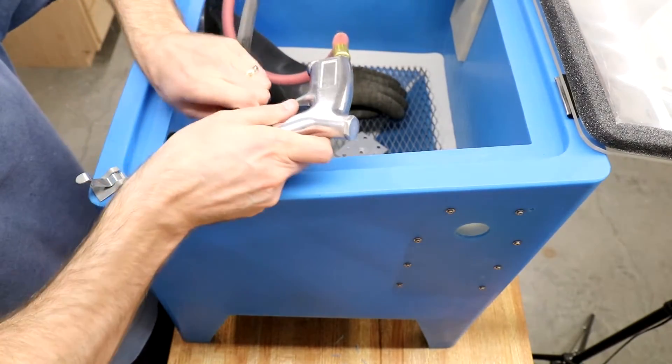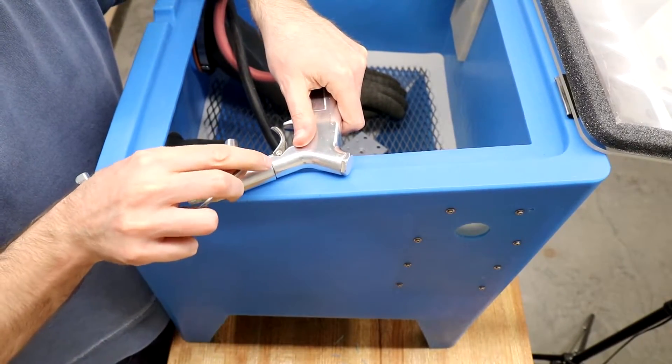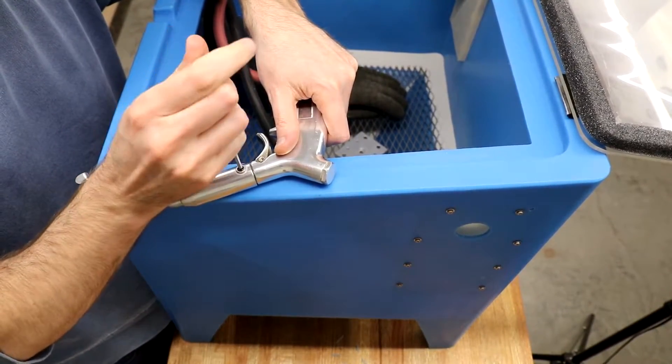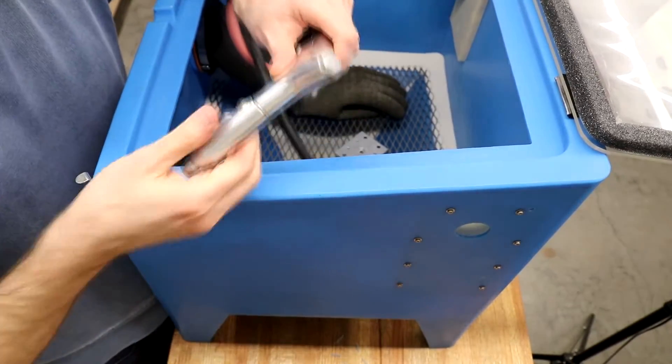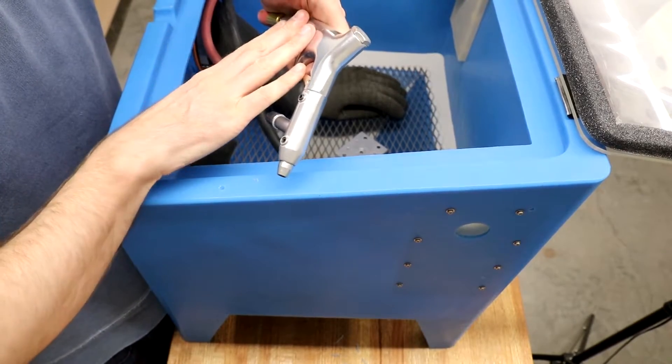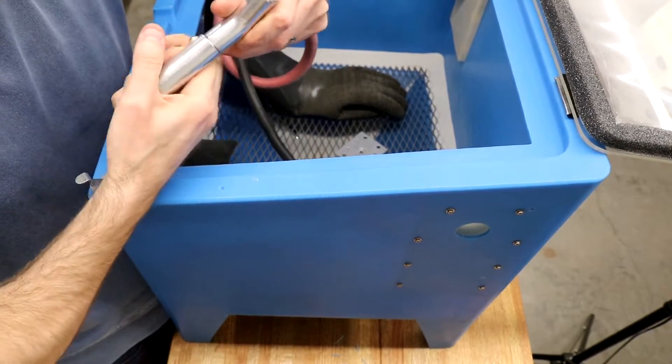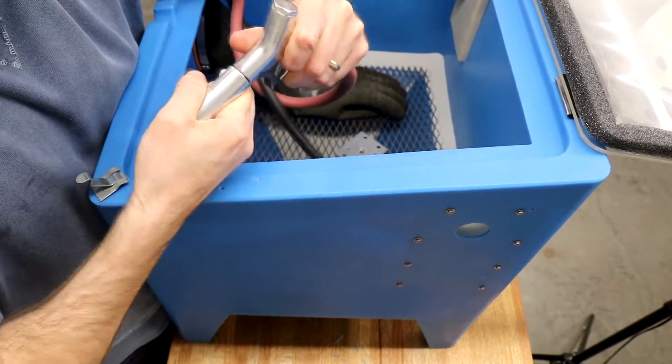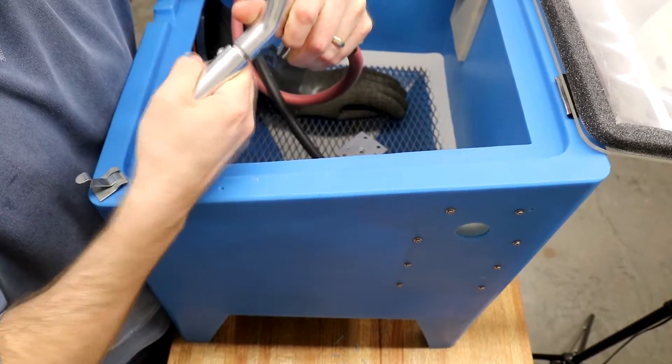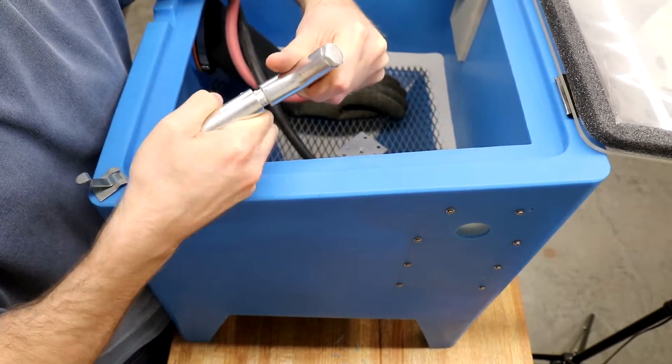The gun of a sandblaster is the most important part, and since not all of them are constructed the same way, I'd like to show you how this one is constructed so you have some reference when comparing other units. This gun separates into four pieces: the handle, this barrel assembly, a nozzle, and an orifice inside. It's not terribly easy to separate this barrel off, but I wanted to do this to show the size difference between the orifice that it came with.